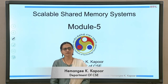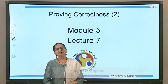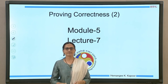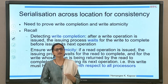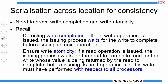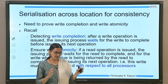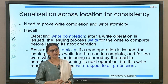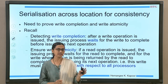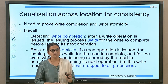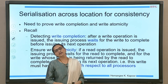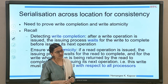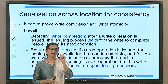Hello everyone. We are doing module 5 on Scalable Shared Memory Systems, lecture number 7, where we continue the discussion on proving correctness aspects. In the previous lecture, we looked at correctness aspects related to write serialization with respect to one location. In this lecture, we are going to start with proving serialization across different locations for consistency. The previous one was write serialization for coherence; this one is write serialization for consistency. A quick recap: write serialization for consistency means we need to prove write atomicity and write completion.